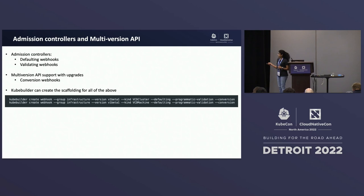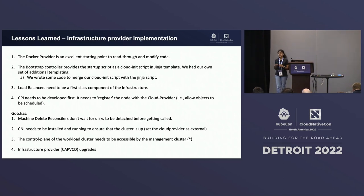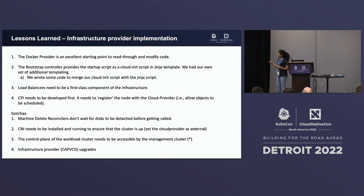A few lessons learned: the Docker provider is an excellent starting point to read through and modify code, which is what we used in the beginning to familiarize ourselves with infrastructure provider implementation — it's very simple. The bootstrap controller generates a CloudInit script in a Jinja template, and we had to do some tinkering to adjust it to our needs. Load balancers are a first-class component of the infrastructure.